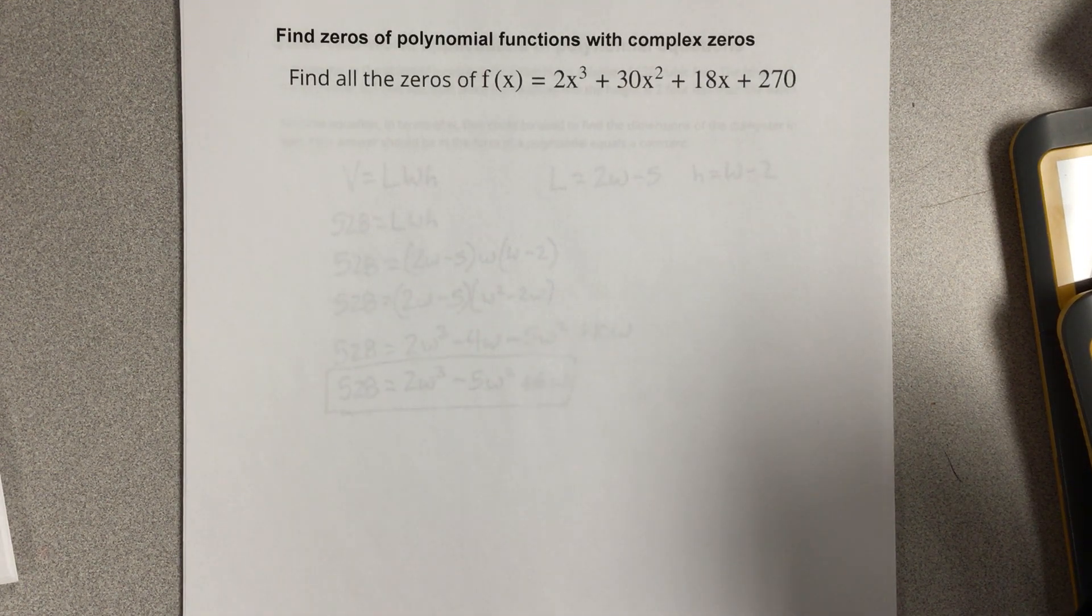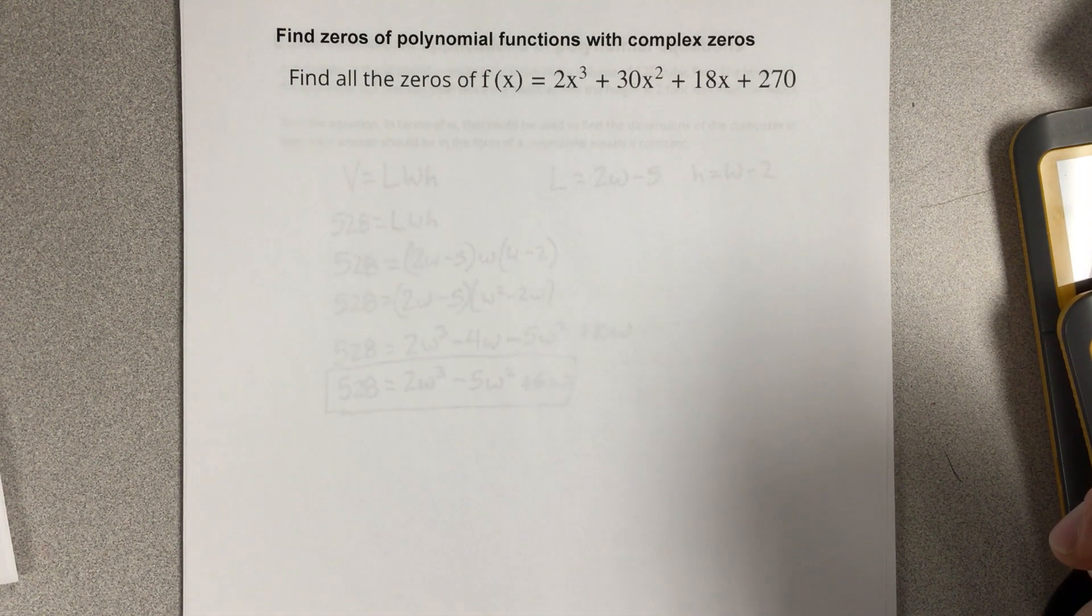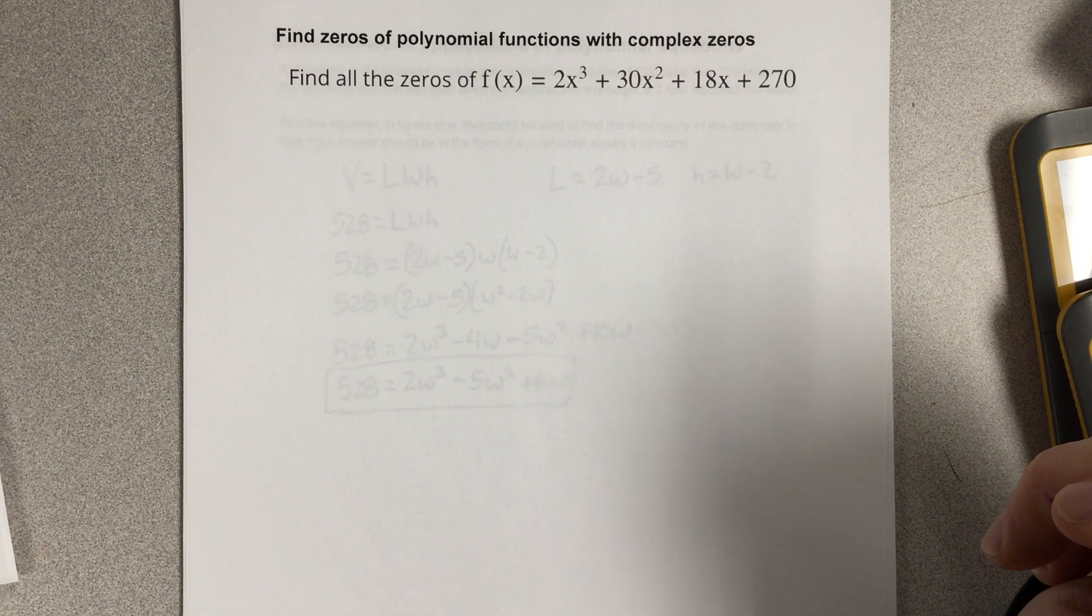In this video, we're going to find zeros of polynomial functions with complex zeros. Find all the zeros of f of x equal to 2x cubed plus 30x squared plus 18x plus 270.